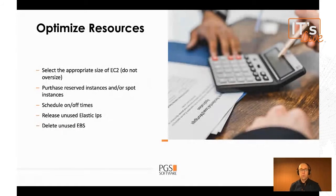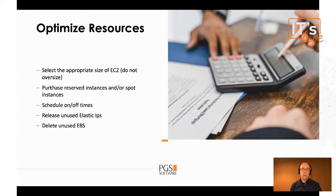First, you have to optimize your resources. For instance, you have to select the appropriate size of your virtual machines — your EC2 machines — so that you are not using large machines when you need small ones. You can also purchase reserved instances or spot instances where appropriate to further save money and make your bill smaller.